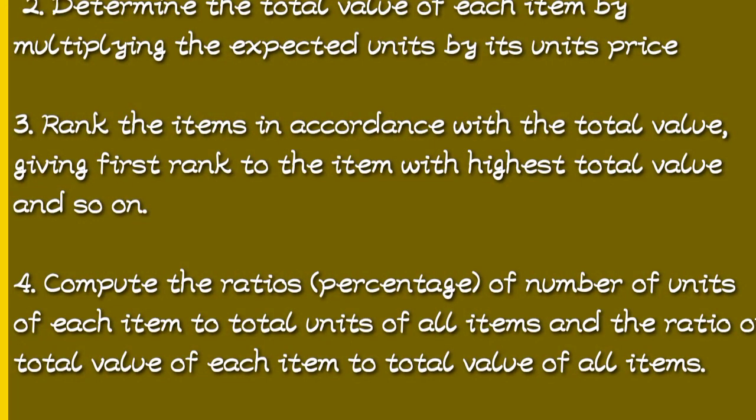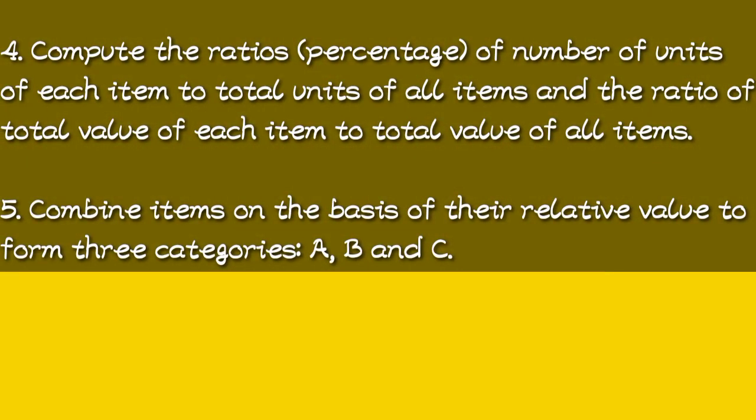The next step is to compute the ratios or percentages of number of units of each item to the total units of all items. The last step is to combine items on the basis of their relative value to form these three categories. The one with the highest value or highest percentage will take A, the second one will take B, and the last one will take the C position. Those are the steps involved when implementing the ABC analysis technique.